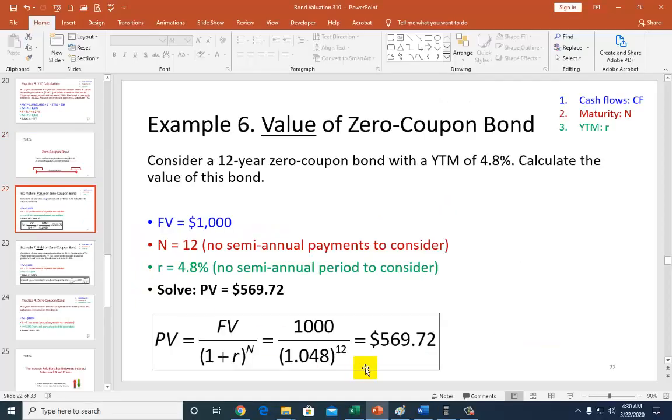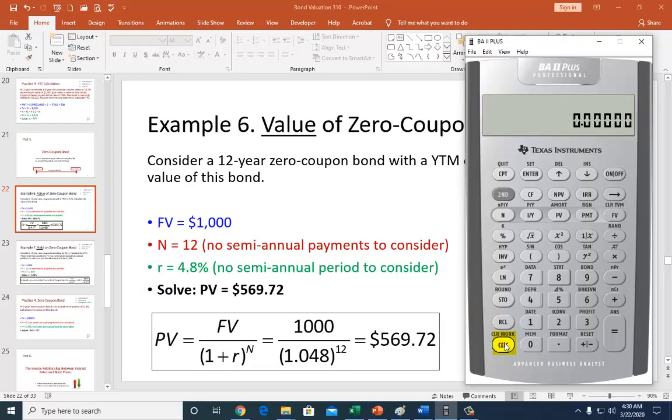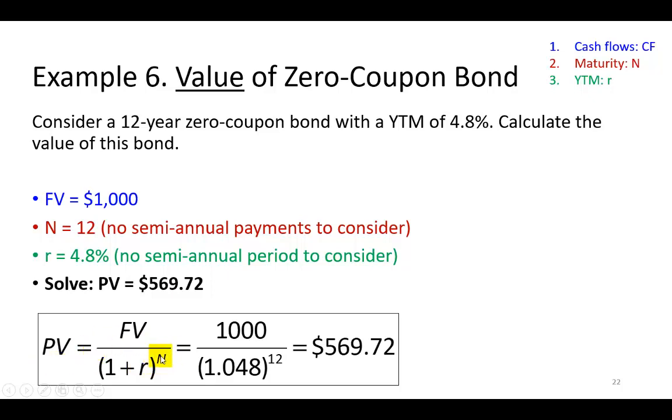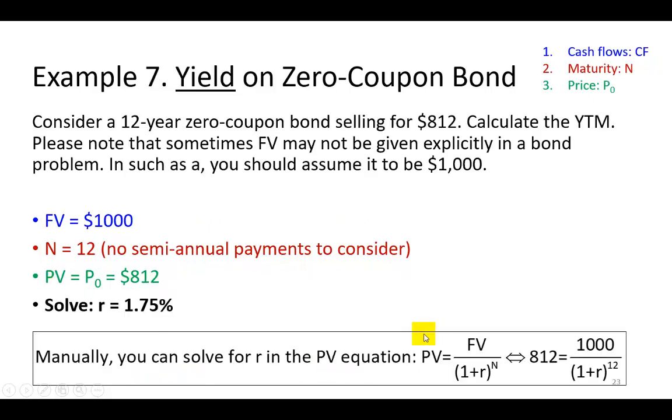So to use a calculator, which is fairly simple to deal with, we clear the screen, second clear TVM, second clear work. And then $1,000 is going to be a future value. Click on it. 12 is going to be the number of periods. And finally, 4.8 is going to be your I over Y, which is the yield to maturity. And then with that, we compute PV. To remove the negative again, click this plus minus key. And that's your final result. You can also, if you want to, do this manually since it's a pretty easy fix right there.